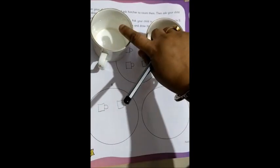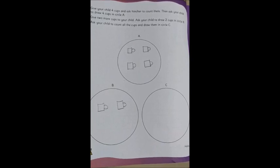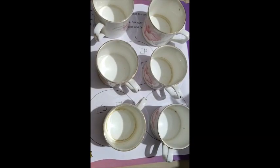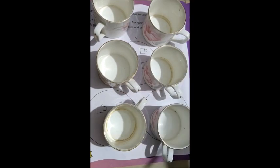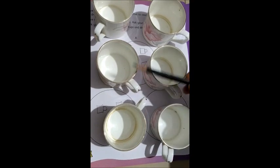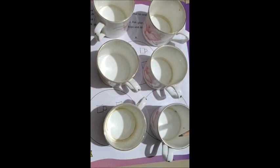Next, let's see what we have to do. Now we ask them to count all the cups and draw them in circle C. So what we have done — we have all first 4 cups in circle A and 2 cups in circle B. Now we tell them to count all the cups: 1, 2, 3, 4, 5 and 6.